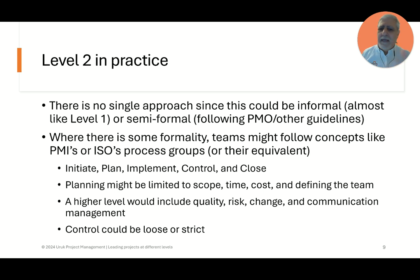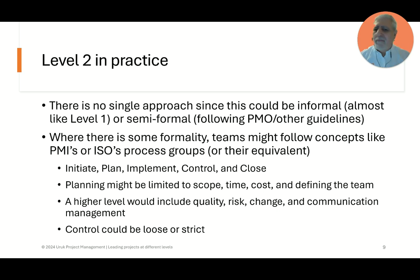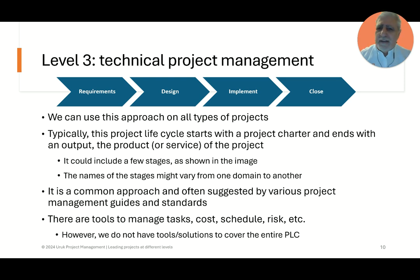We follow processes like PMI — initiate, plan, implement, control, and close. Planning in this case might be limited to scope, time, and cost, and defining the team — a little bit more than level one. At a higher formality level, if the organization has a PMO or guidelines available, they might have some processes to include quality, risk, change, and communication. Control could be loose or strict depending on the organizational level of maturity. Note that this has nothing to do with the maturity level of the organization — these levels describe the type of project management applied in different contexts.